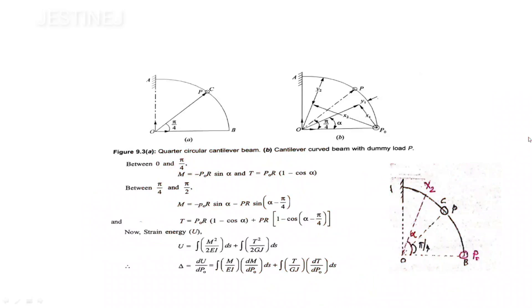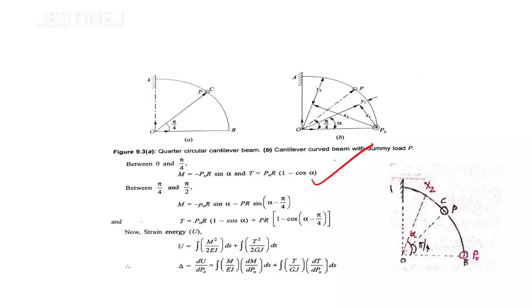So for the region 0 to π/4: bending moment M = -P₀R sinα, and torsional moment T = P₀R(1 - cosα). After that, we consider the section in the region from π/4 to π/2. In this portion, the bending moment includes the dummy load contribution minus P₀R sinα, plus the contribution from the actual load P. Taking the total angle as α and the known angle as π/4, the remaining angle is α minus π/4.